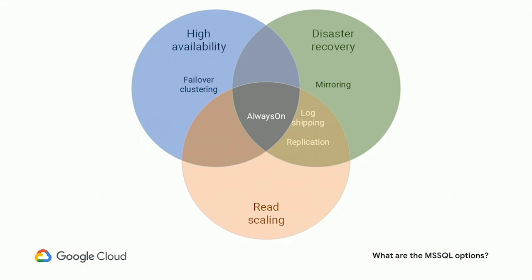Let's start by looking at what options are available in SQL Server. You can see this rather nice Venn diagram with three main areas. There's high availability, if you want to be protecting against individual instance failures. There's disaster recovery, if you want to be protecting against entire region failures. And there's also read scaling, if either your application has quite high read requirements, or you have a geographically spread app that would benefit from more data locality.